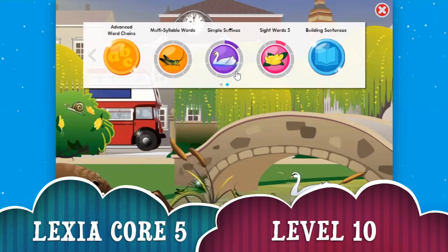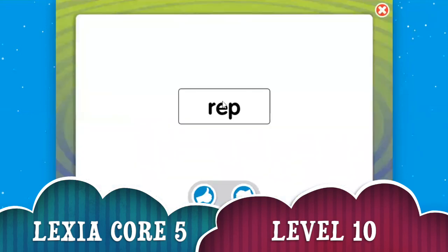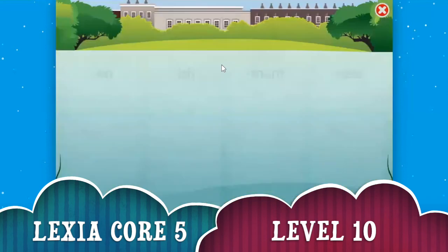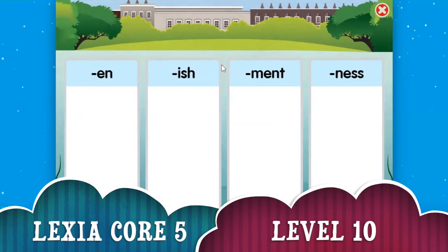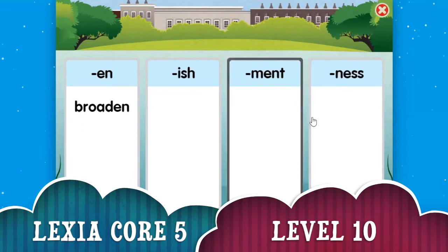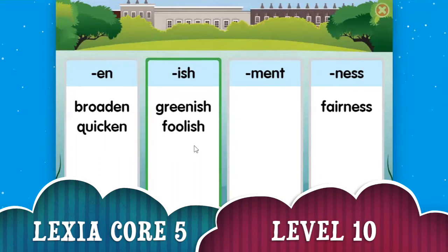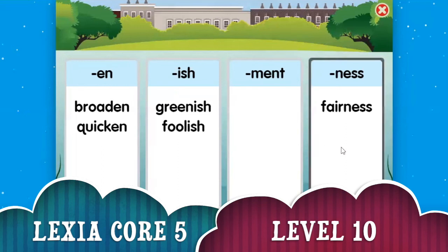Let's make you have choices — silence five, simple suffixes, or multi-syllable words. Which one do you pick, Mifoos? You picked sight words five. Okay, must be simple suffixes. Which one do you want to do? I think I want to do simple suffixes. So Brodin goes with n, and ness goes with fairness, and ish goes with greenish. Where does quicken go, Mifoos? Quicken goes with en. Yes, great.